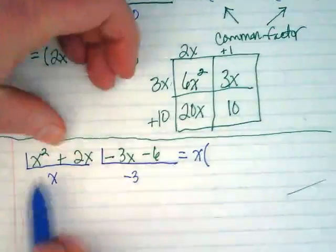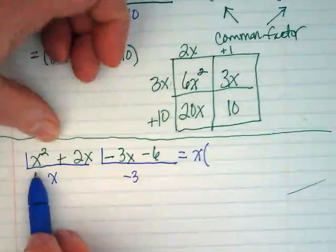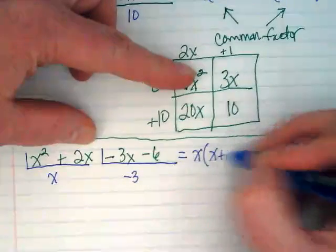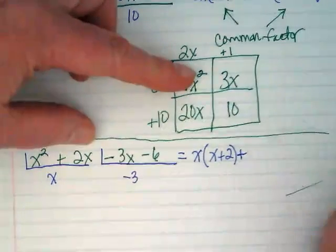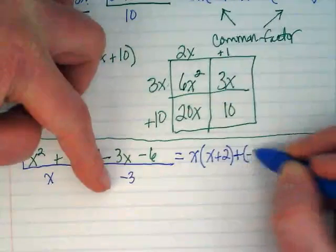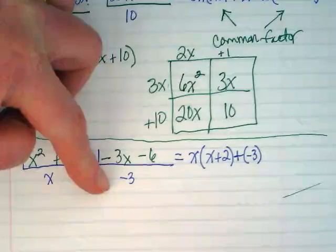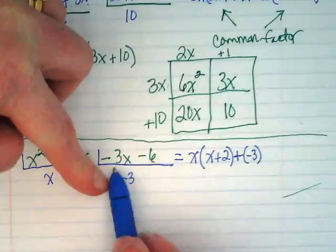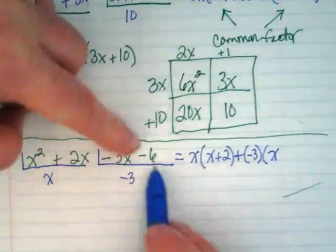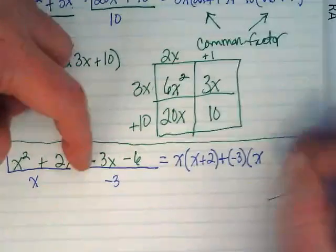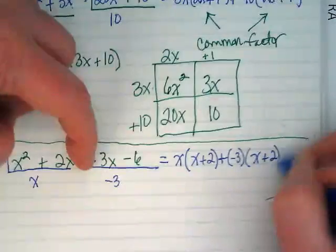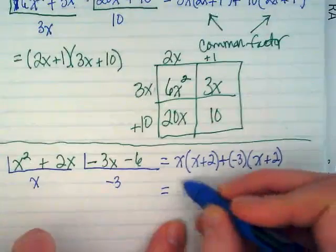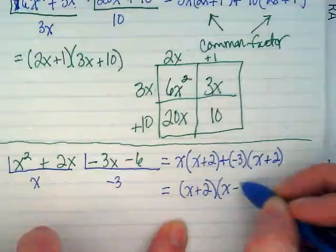So I'm going to rewrite this as an addition problem. We're going to have x times what's going to go in the parentheses. X plus 2. And I'm going to put a plus sign there. Negative 3. I'm going to put the negative 3 in parentheses just because it has that negative and I don't want to lose it. You know how things can start looking messy? Okay, if I take negative 3x and divide it by negative 3, what's going to get x? Negative 6 divided by negative 3 is 2. And I have a common factor here.